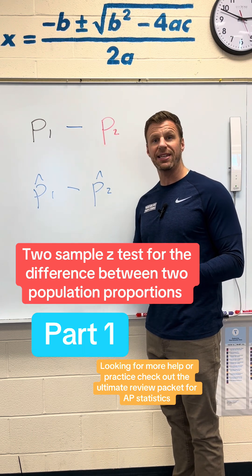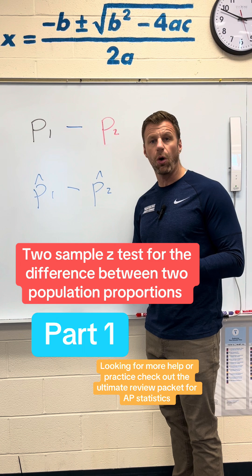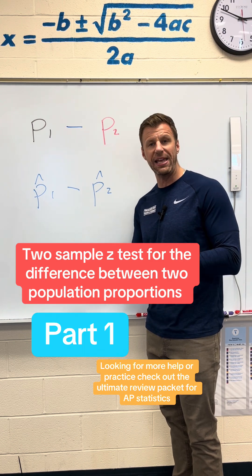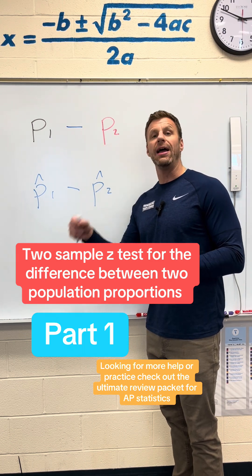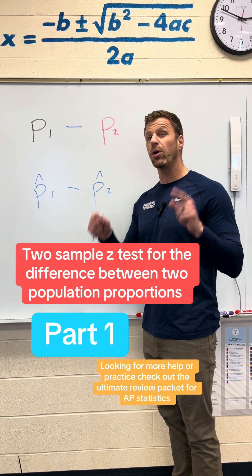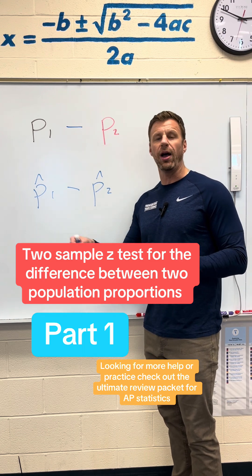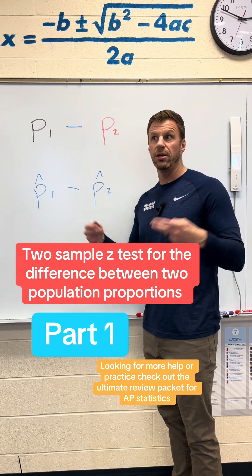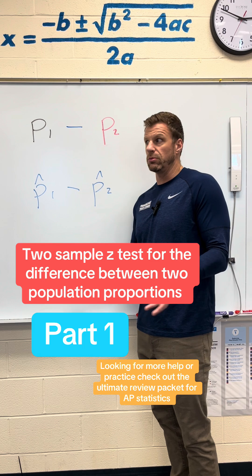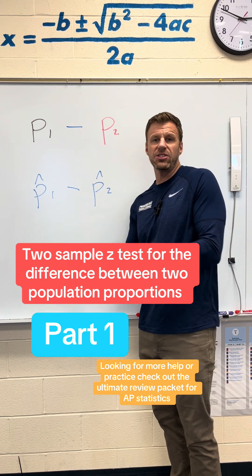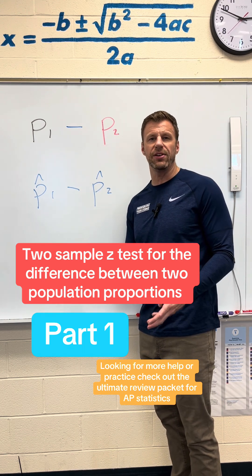Step three is to get our z-score, known as the test statistic, and our p-value. And then in step four, we're going to use that p-value to draw a conclusion for the whole problem — is there evidence, or is there a lack of evidence?